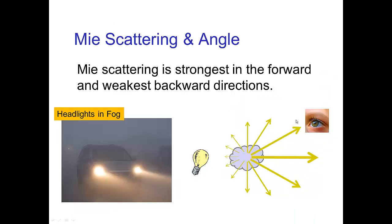The other type of scattering, which occurs with larger — tiny but larger — particles than Rayleigh scattering, is Mie scattering. With Mie scattering, typical of scattering in fog, it is strongest in the forward direction and weakest in the backward direction.